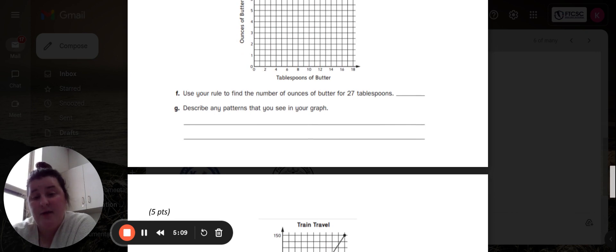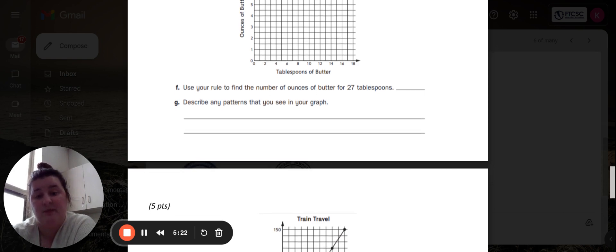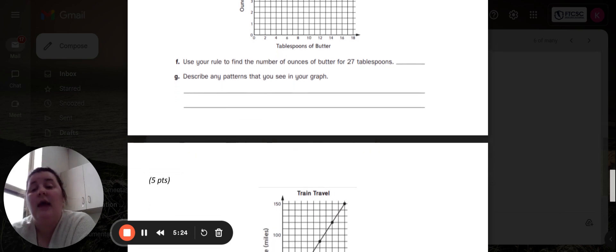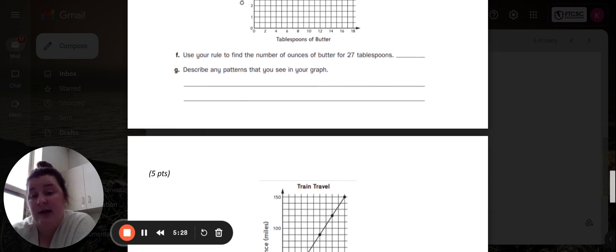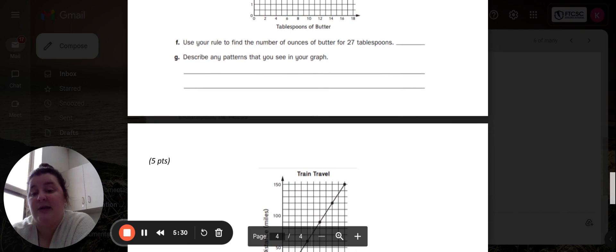Part F wants you to use your rule that you wrote above to find the number of ounces of butter for 27 tablespoons. And part G wants you to describe any patterns that you see in your graph. You may pause the video and complete those at any time.